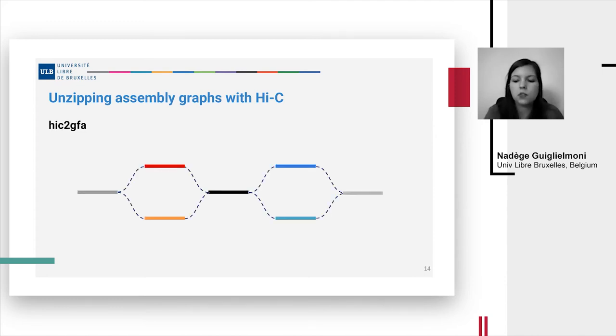Now let's try to solve our assembly graph with HiC2GFA. So we can see that the links of gray to red and to orange are strongly supported by Hi-C data as you have strong interactions between gray and red and between gray and orange. So gray is duplicated and connected to both.